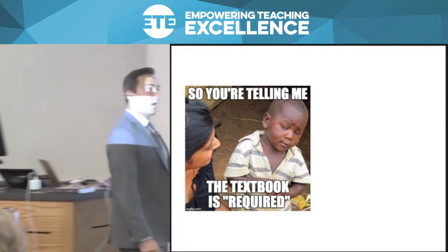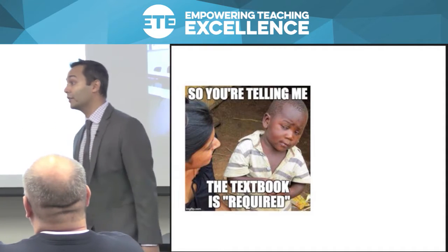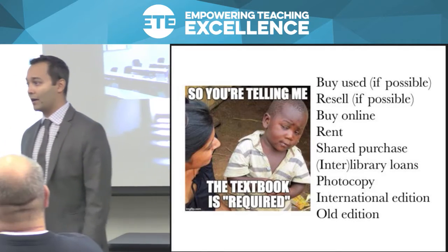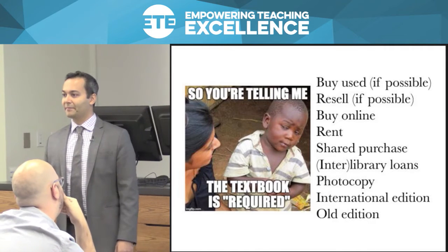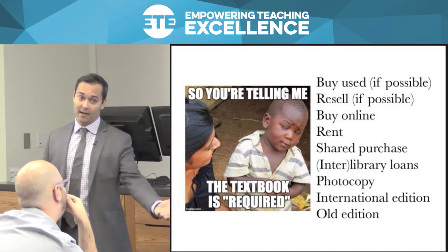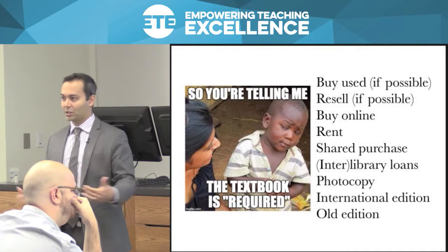Students will buy used copies if possible — if there's not a new edition that came out during the summer. They'll resell at the end of the semester if possible — if there's not a new edition midway through the semester rendering their $200 textbook worth $10. They'll buy online, rent, share purchases. A lot of students are realizing they can buy international editions of textbooks, which are essentially the same content at a fraction of the cost. And increasingly, old editions. When a student emails me asking to use the fourth or third edition, I go in with the usual cautionary tale — you're free to do whatever you like, but you're going to be assessed based on the current edition and are responsible for any mismatched content.